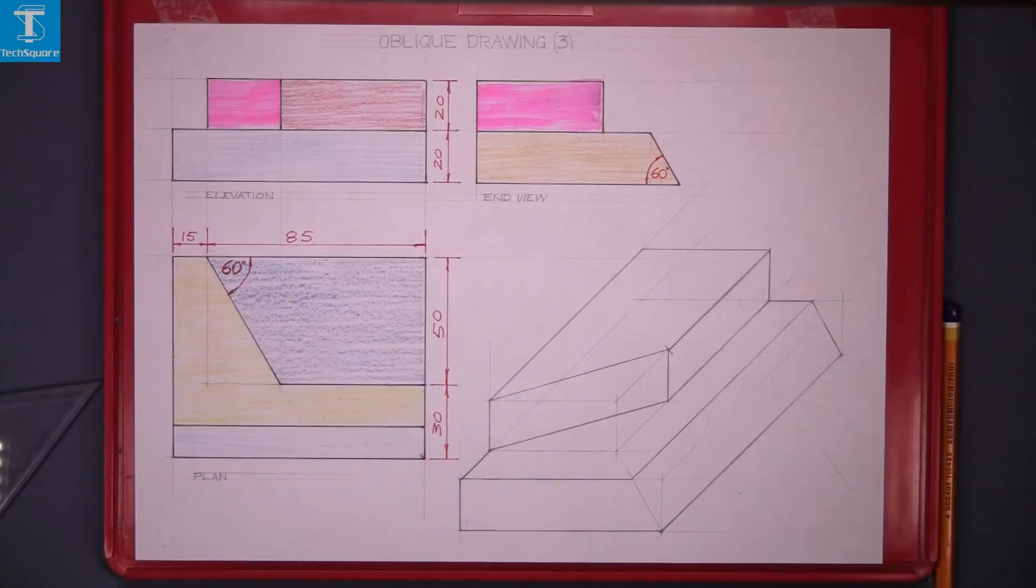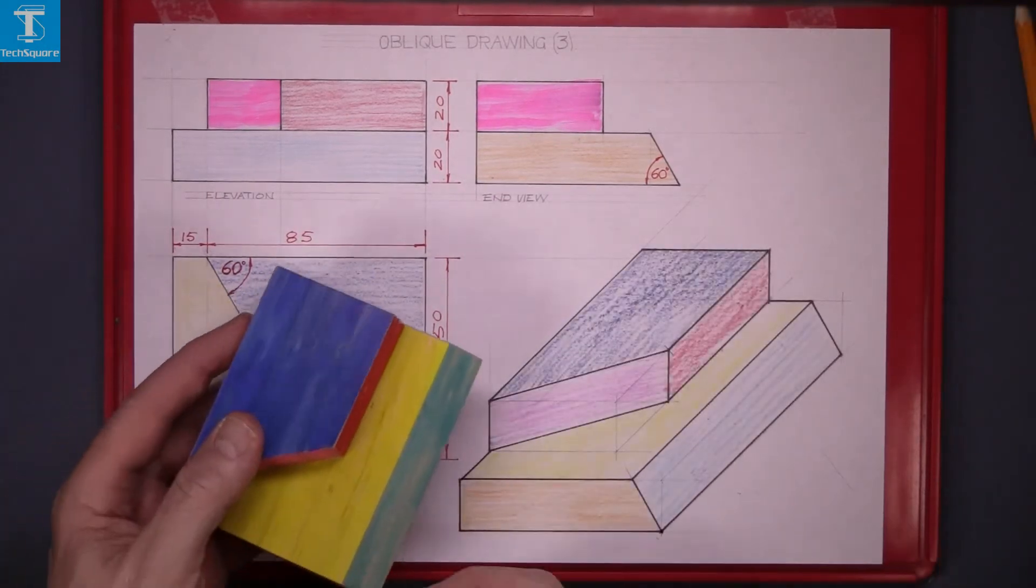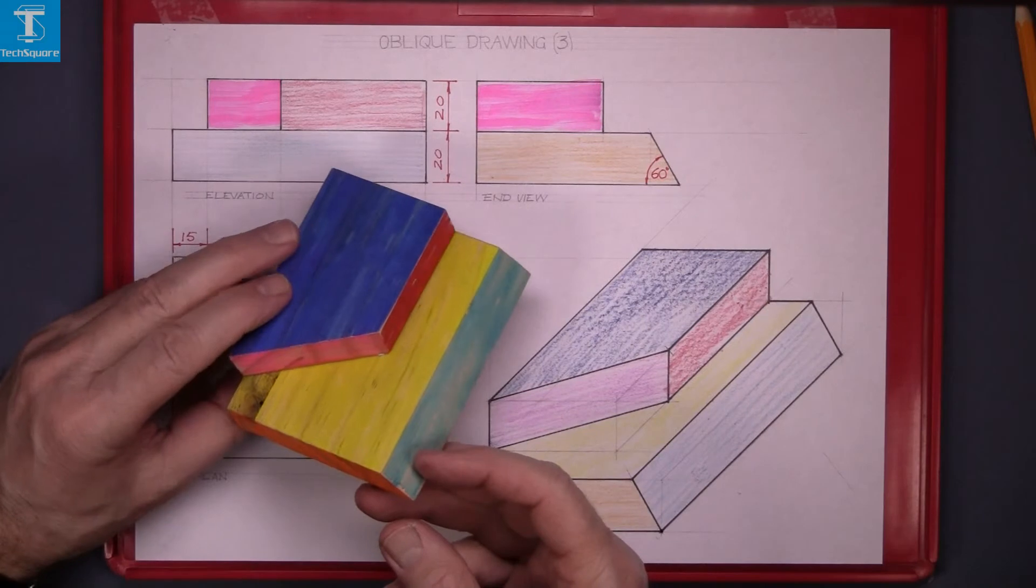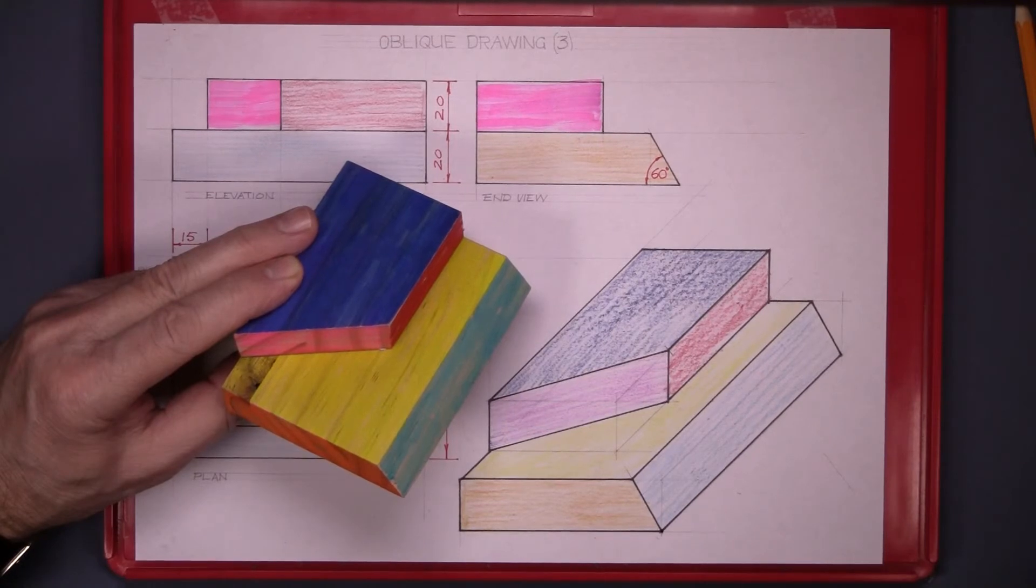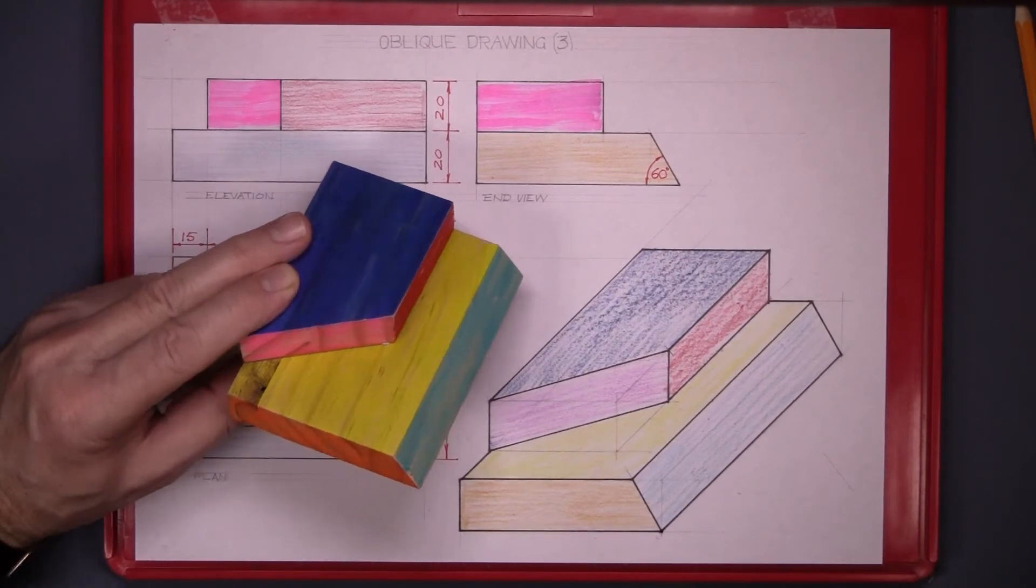And that's it lined in. Add a little bit of colour to it. And that's it as we see it there now. And that's oblique drawing three complete.